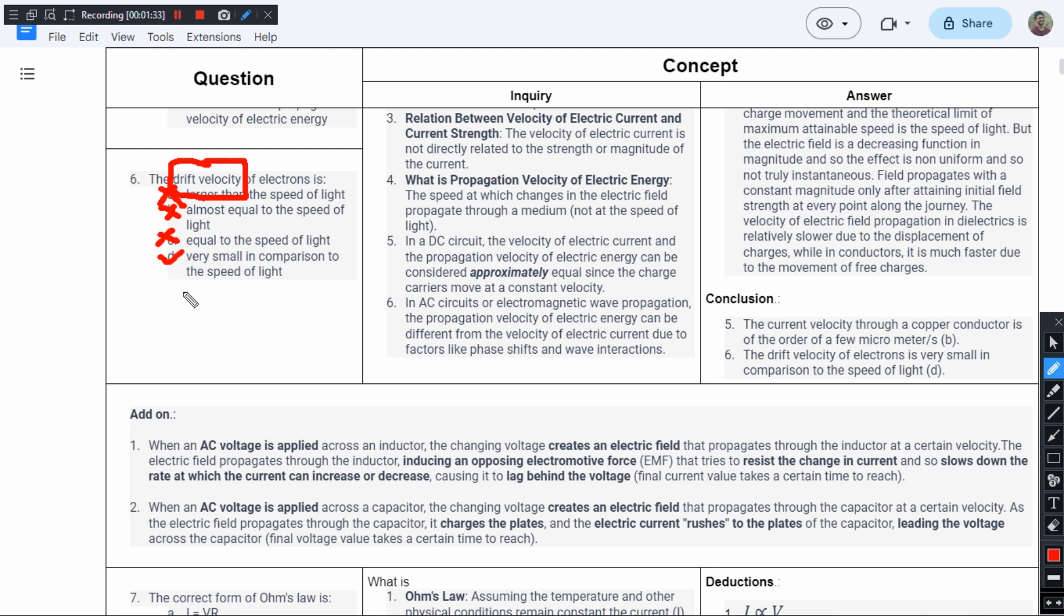This is a generalized statement. No one is hurt in this answer. So option D is the right answer. The drift velocity of an electron is very, very small, not very small, it's very, very small in comparison to the speed of light because of the bombardments it goes through.